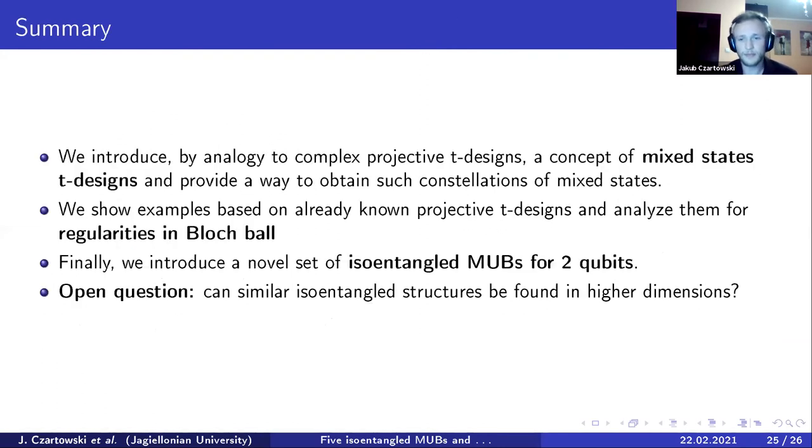So in summary, we first of all introduced by analogy to complex projective t-designs a concept of mixed-state t-designs and provide a way to obtain such constellations for mixed states. We show examples based on already known projective t-designs and analyze them for regularities. Furthermore, we introduced iso-entangled MUBs for two qubits. I also forgot to mention in the summary that we moreover introduced designs for probability simplex. And there remains an open question whether similar iso-entangled structures can be found for any higher dimensions, for instance, for qutrits and MUBs.